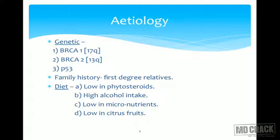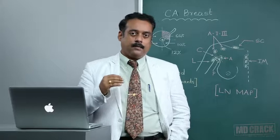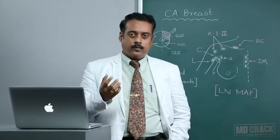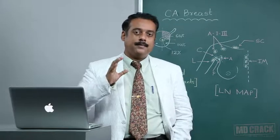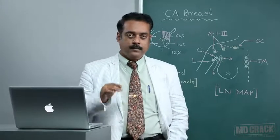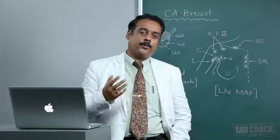Diet plays an extremely important role in the development of various malignancies. In CA breast, a diet low in phytosteroids contributes to risk. Increased alcohol consumption, due to urbanization, makes females more prone to this malignancy. The fast-paced lifestyle means people eat ready-made food that lacks micronutrients, which is a very high risk for CA breast development. A diet low in citrus fruits and fresh food also contributes to CA breast.